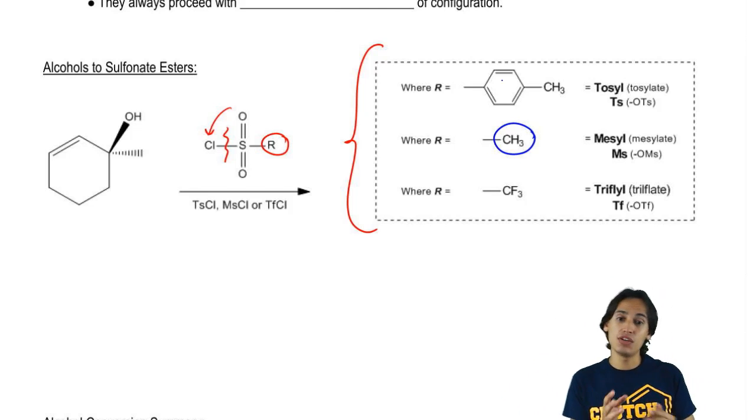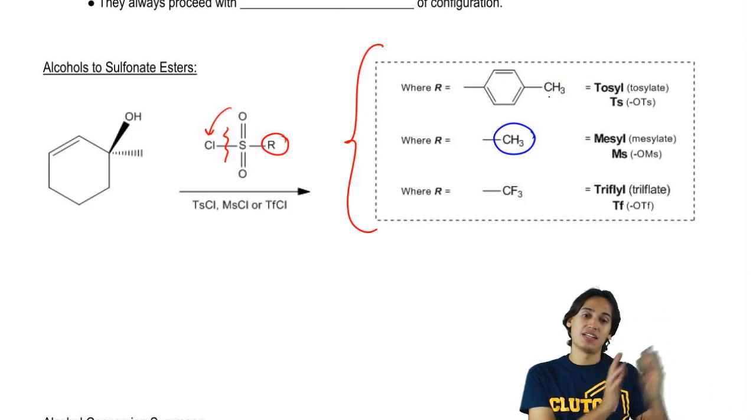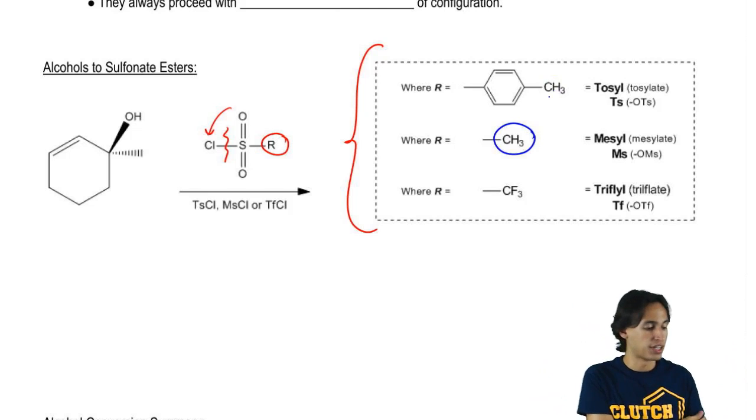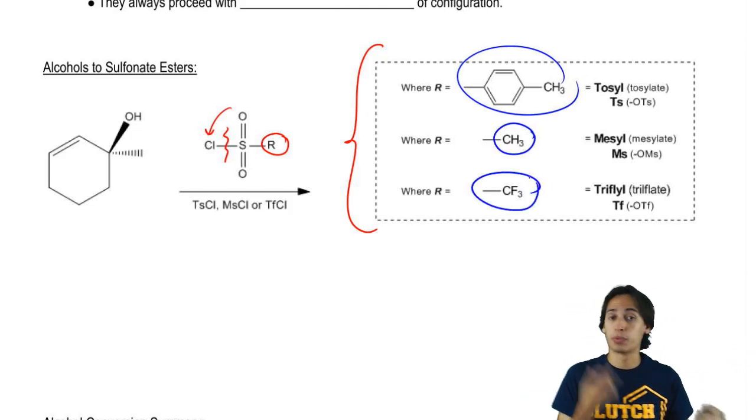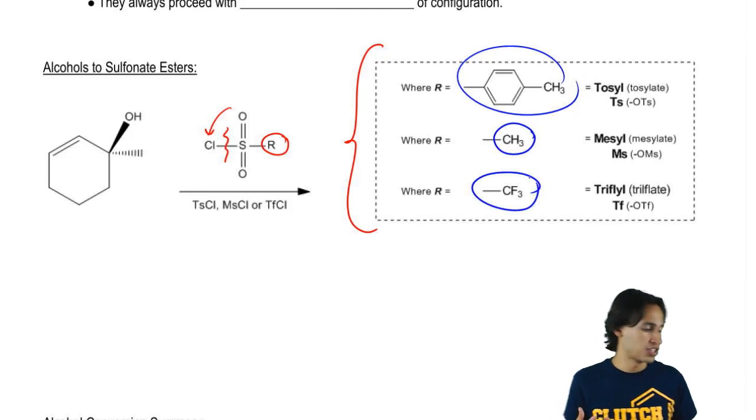How about if it's a benzene ring with a methyl group? Well, then that's called a tosyl. So basically if the R is a benzene and a CH3, then that's a tosylate. And then finally if it's a CF3, so I just replace three H's with F's, that's called a triflate.